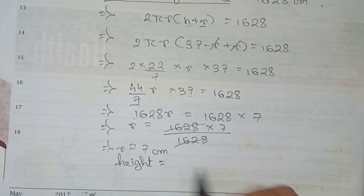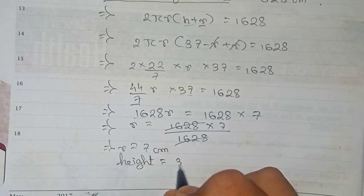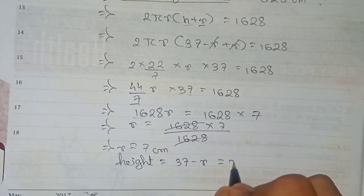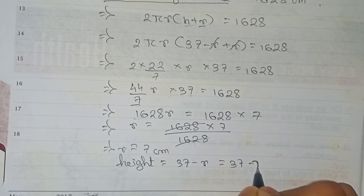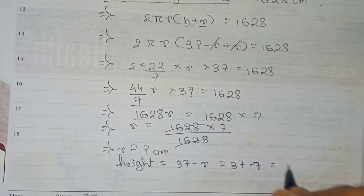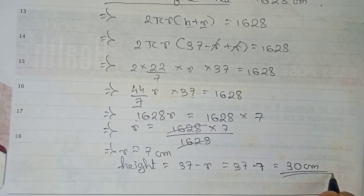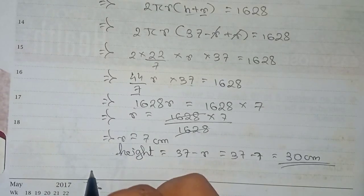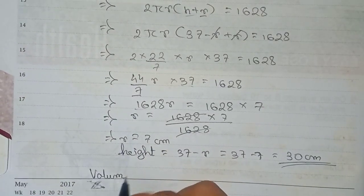Now we can find the height. We have h equal to 37 minus r, so height equals 37 minus 7, which gives us height equal to 30 centimeters.